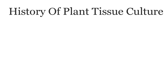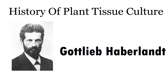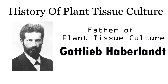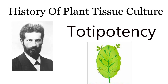History of Plant Tissue Culture. Gottlieb Haberlandt, a German scientist, is recognized as the father of plant tissue culture. He proposed the theoretical basis for plant tissue culture based on his experiments on the culture of single cells on an artificial medium in 1902. From there, he predicted that one could successfully cultivate artificial embryos from vegetative cells, thus clearly establishing the concept of totipotency.